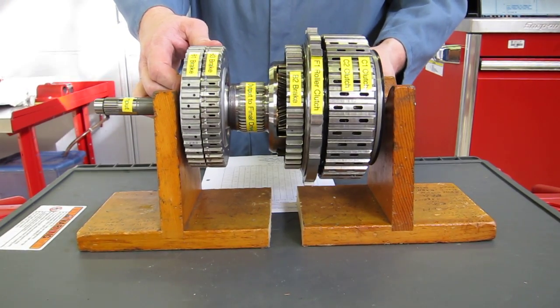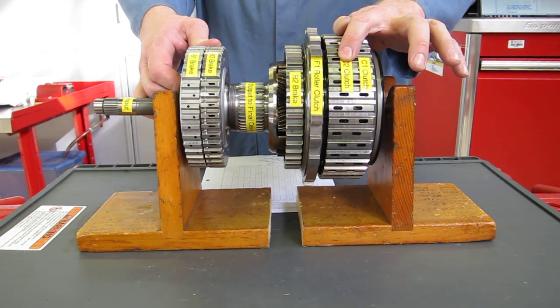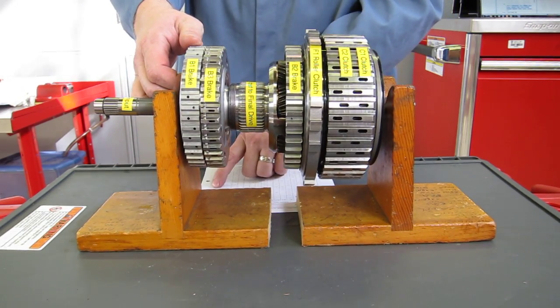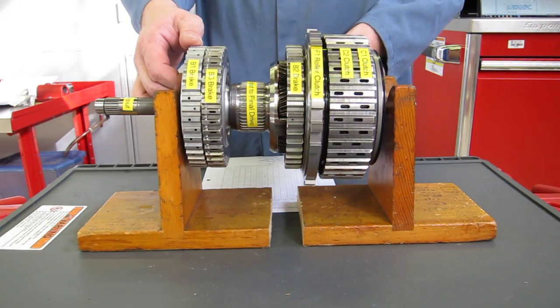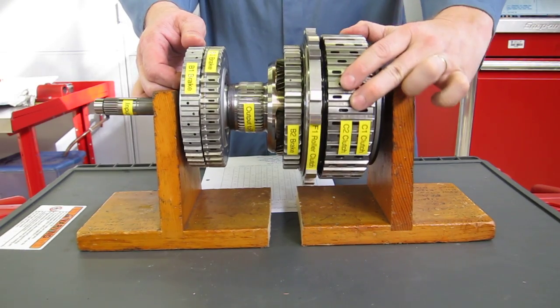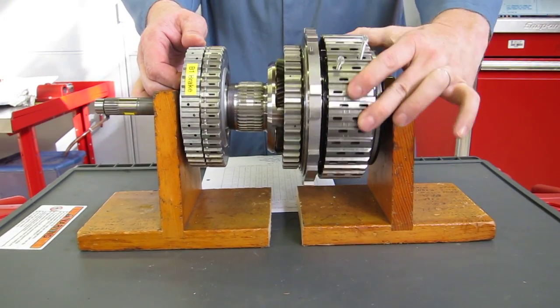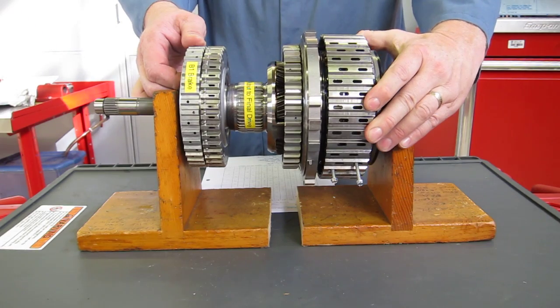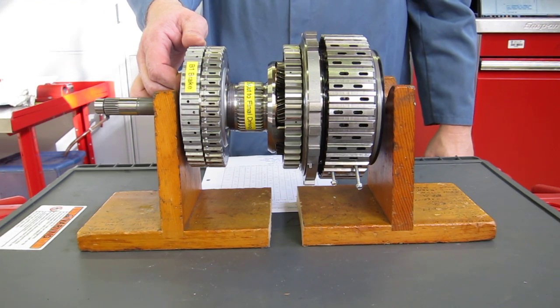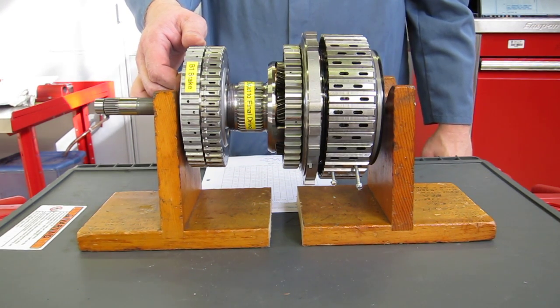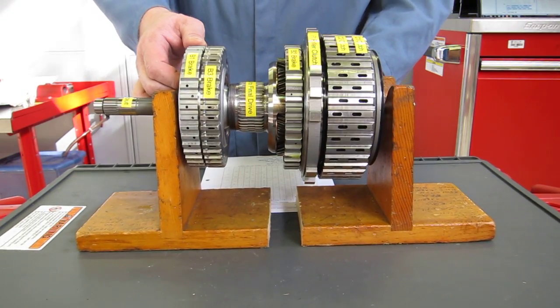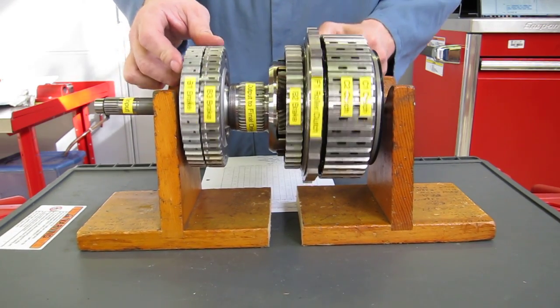To go to sixth gear, we're going to keep the C2 clutch applied. And now we're going to apply the B1 brake, which is this brake right here. And that should give us 0.6 turns of the input to one turn of the output. So here we go. 0.6. Yeah, it's really spinning fast. We've got about six-tenths of a turn of the input to one full turn of the output. That's our sixth gear, which is a double overdrive. So let's go back to where we began. Pretty much got all the labels lined up.